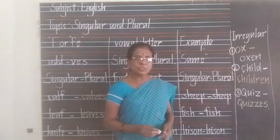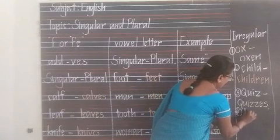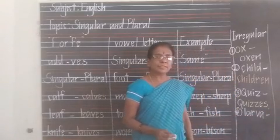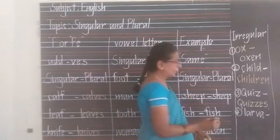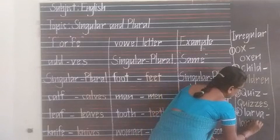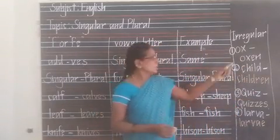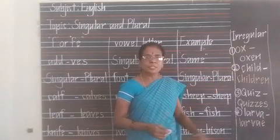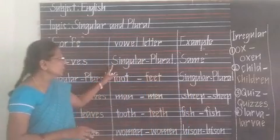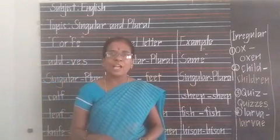These are some irregular nouns — singular and plural. They are irregular nouns. Okay children, in this class you have learned some more singular and plural rules. I hope you enjoy this class. I will meet you in the next class, children.